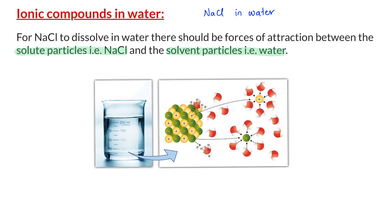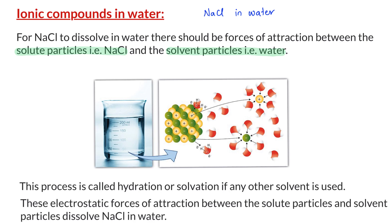As the sodium chloride dissolves, it breaks apart into Na+ and Cl-. The positively charged Na+ ions are attracted to the partial negative ends of water molecule, i.e. oxygen atoms, and the negatively charged Cl- ions are attracted to the partial positive ends of the water molecules, i.e. hydrogen atoms. This process is called hydration or solvation if any other solvent is used. These electrostatic forces of attraction between the solute particles and the solvent particles dissolve the sodium chloride in water.